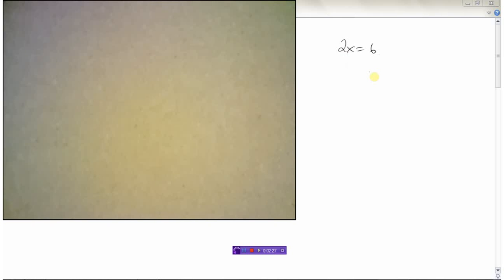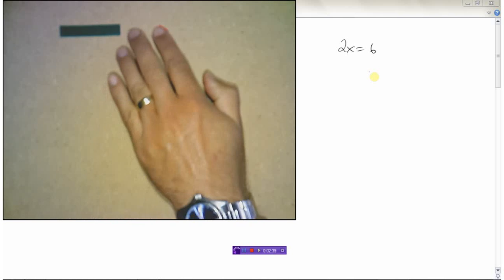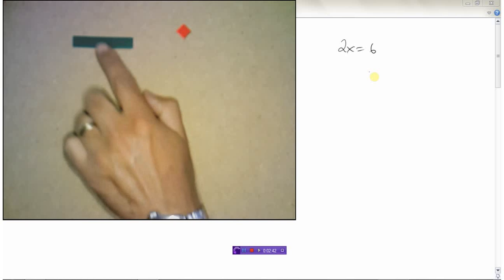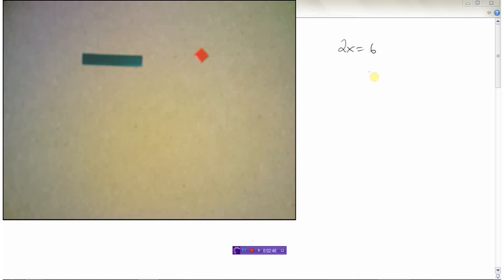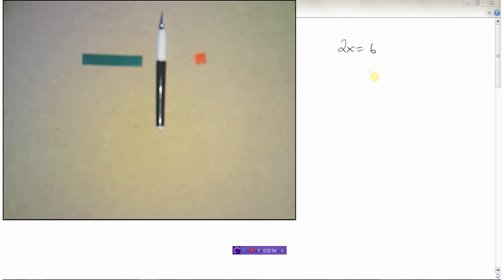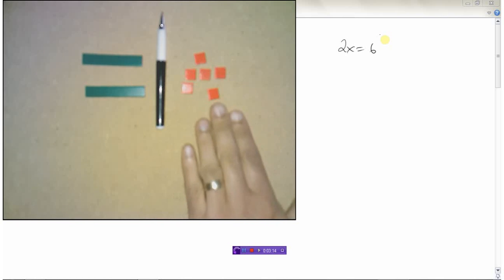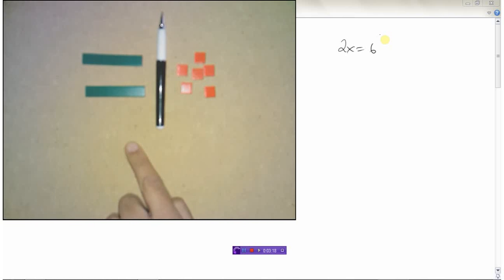Let's go back and look at the equation 2x equals 6, and I'm going to introduce you to algebra tiles. This tile here represents an x, and this one represents the number 1. I'll use my pen as an equal sign. To model 2x equals 6, I need two x-tiles and six unit tiles. So here we go — I've got 2x equals 1, 2, 3, 4, 5, 6. 2x equals 6.